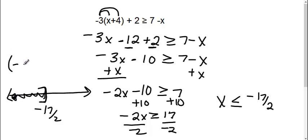Set notation: we're going from negative infinity to negative 17 over 2 with a bracket.